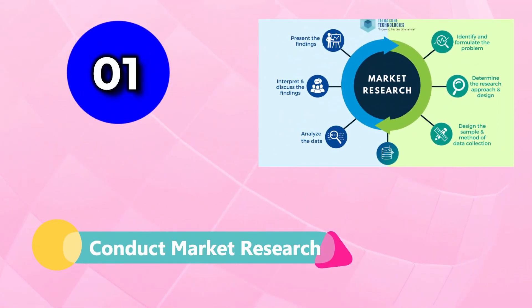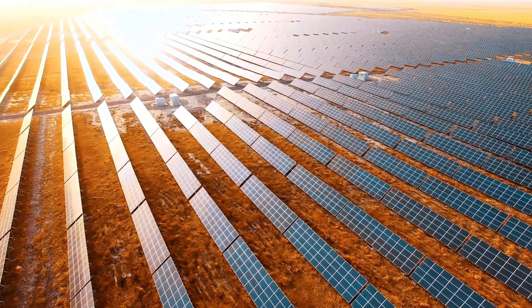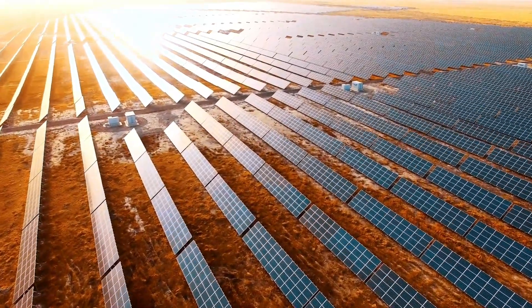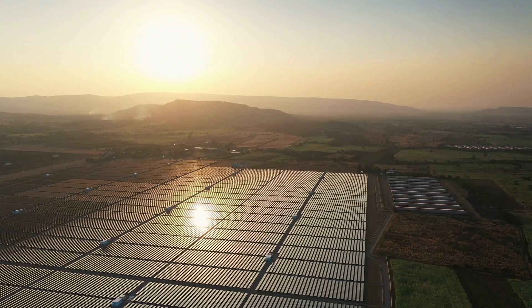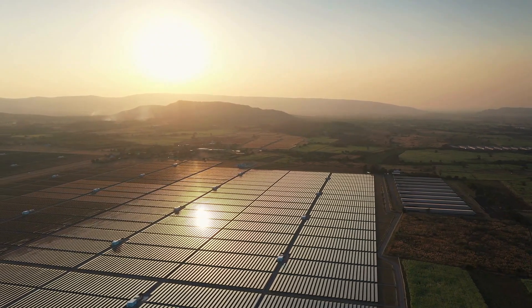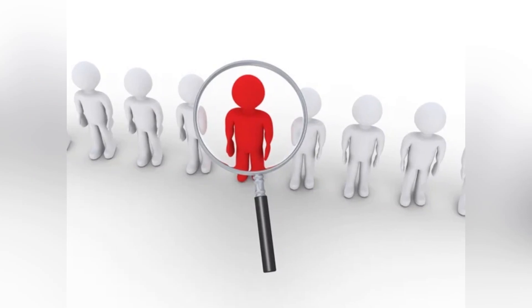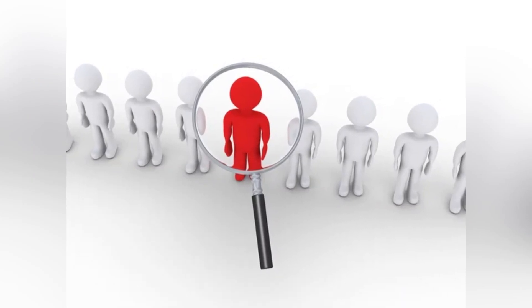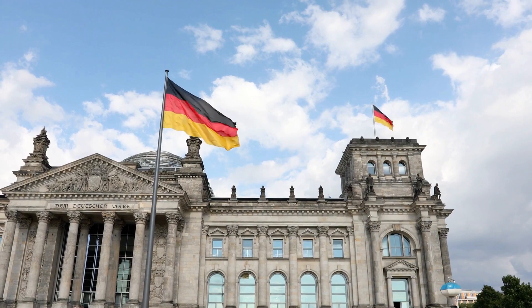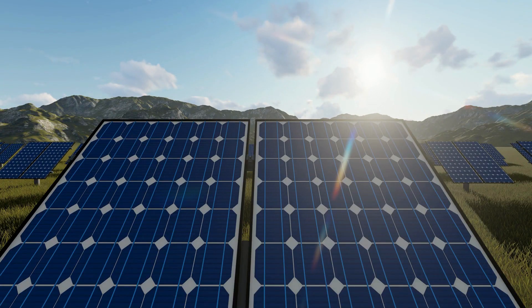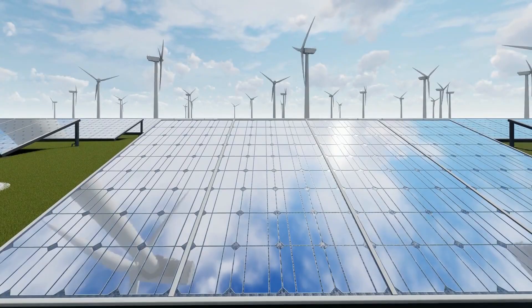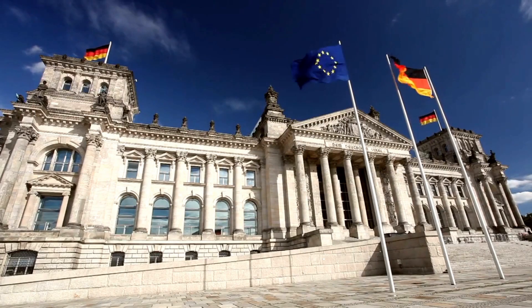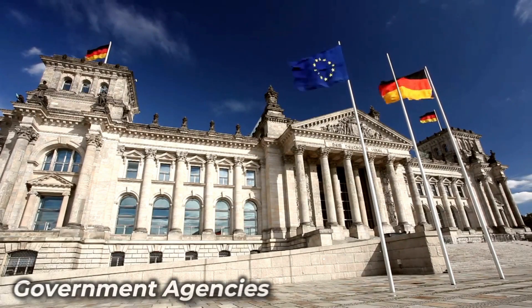Step 1: Conduct Market Research. Before starting a solar farm, it is important to conduct market research to determine the viability of the project. This involves evaluating the potential demand for solar energy in your area and identifying potential customers, as well as researching government policies and incentives for renewable energy projects. To start, gather data on current energy usage and demand in your area, including information on energy costs and existing energy sources. This information can be obtained from local utility companies and government agencies.